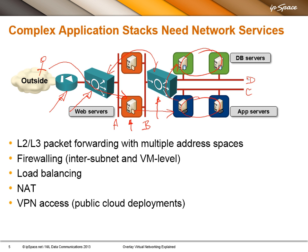Next, we need firewalling — either inter-subnet, like this box here, or VM-level firewalling in front of a virtual machine. We also need load balancing and NAT, because people still run these things on IPv4 and we are short on IPv4 addresses. So you would have something like 10.1.2.0/24 on the inside, a public IP address on the outside, and NAT between them. Particularly for public cloud deployments, you need VPN access — a tunnel from the home data center into the cloud instance of the application stack.